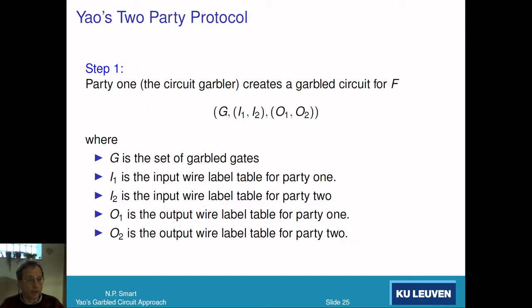We're going to divide the parties into party 1, who we're going to call the garbler. They're going to be the one that encrypts the circuit. And party 2, who's going to be the evaluator, is going to evaluate the circuit.